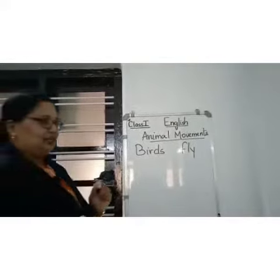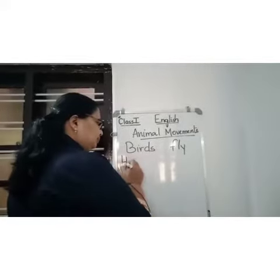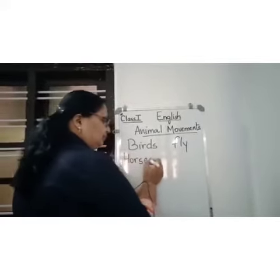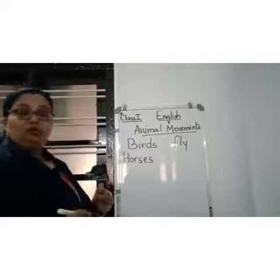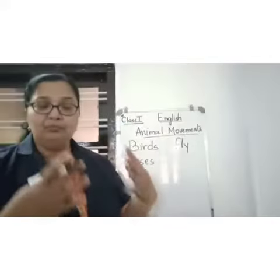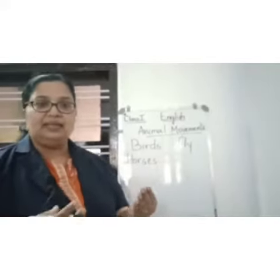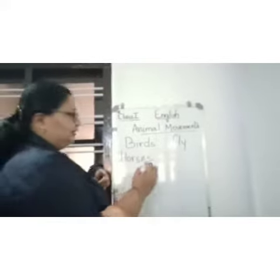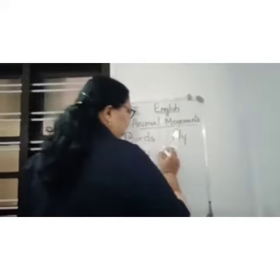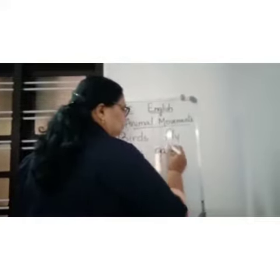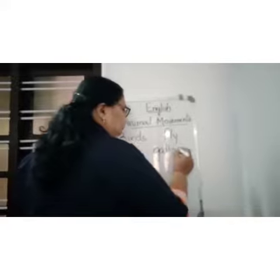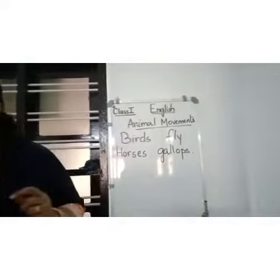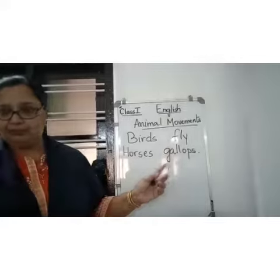Another one — horses. What do horses do? The movement that the horse makes, that is called galloping. Gallops. Horses gallop.